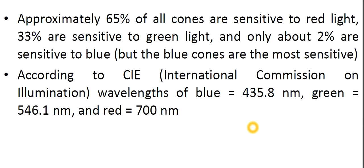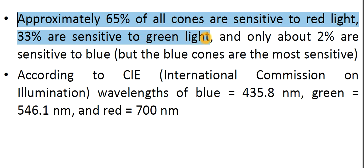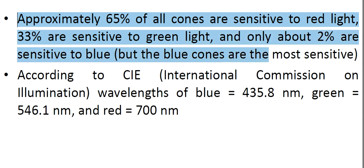Six to seven million cones in the human eyes can be divided into three principal categories: red, green, and blue. Approximately 65% of all the cones are sensitive to red light, 33% are sensitive to green light, and only about 2% are sensitive to blue. But the blue cones are the most sensitive.